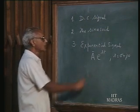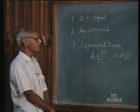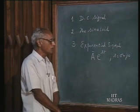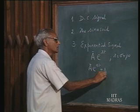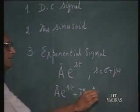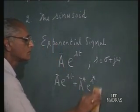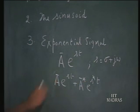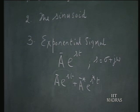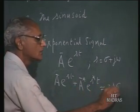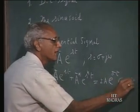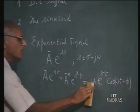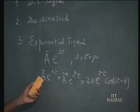Any signal of this type will in general yield a complex value for real values of time. So in order for us to have a real function of time, every such signal ae^(st) is always accompanied by its conjugate e^(s*t). In a physical situation, whenever you have such a signal, the corresponding signal with the conjugate coefficient and the conjugate of the complex frequency will be present simultaneously. These two together yield a real signal 2a·e^(σt)·cos(ωt + φ).